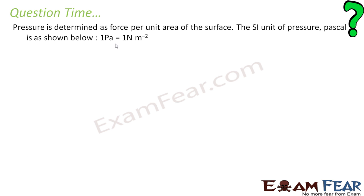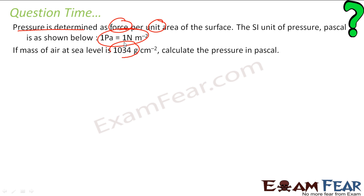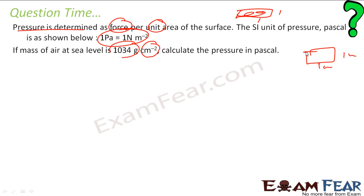We have to find the pressure, where the definition of pressure is given as force per unit area. If the mass of air is 1034 grams per centimeter square — that is, if you take a 1 cm × 1 cm area, the mass of air in this column is 1034 grams — we have to find the pressure in pascals.